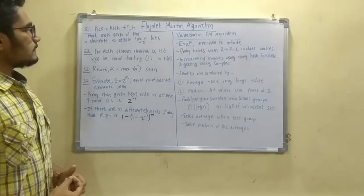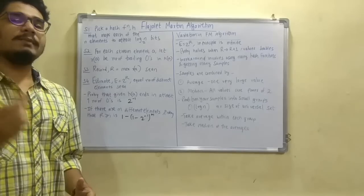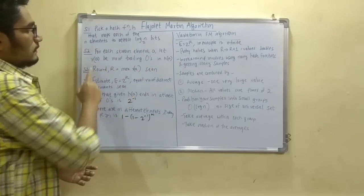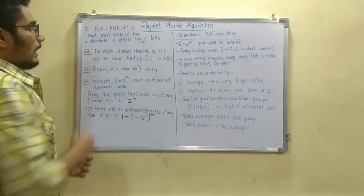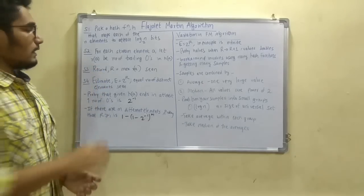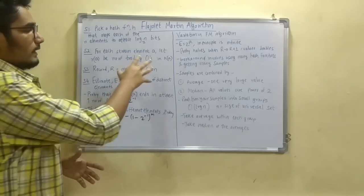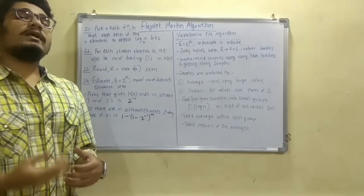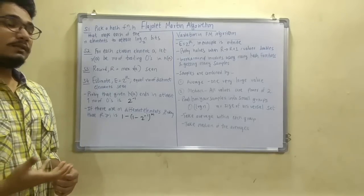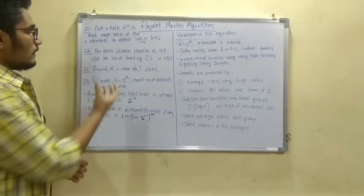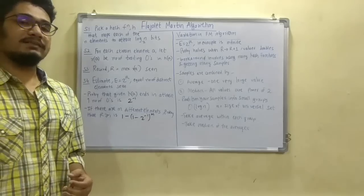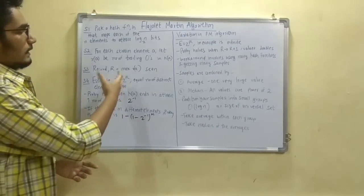Next, for each stream element a, we compute the trailing number of zeros — that is, r(a) is the trailing number of zeros in H(a). So for this particular hash function we calculate how many trailing zeros are actually there. Then we record this result into R, which is computed as the maximum of all the trailing zeros seen, that is max of r(a).